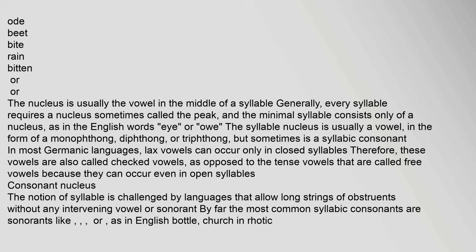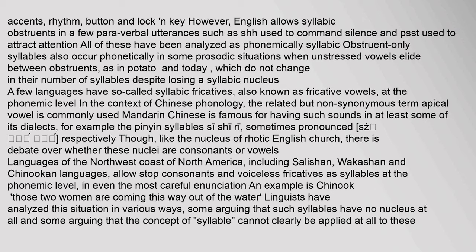The notion of the syllable is challenged by languages that allow long strings of obstruents without any intervening vowel or sonorant. By far the most common syllabic consonants are sonorants, like 'l' or 'r,' as in English 'bottle' or 'button.' English also allows syllabic obstruents in a few pairs of verbal utterances. A few languages have so-called syllabic fricatives, also known as fricative vowels, at the phonemic level. In the context of Chinese phonology, the related term 'apical vowel' is commonly used. Mandarin Chinese is famous for having such sounds in at least some of its dialects — for example, the pinyin syllables 'si,' 'shi,' and 'ri.'